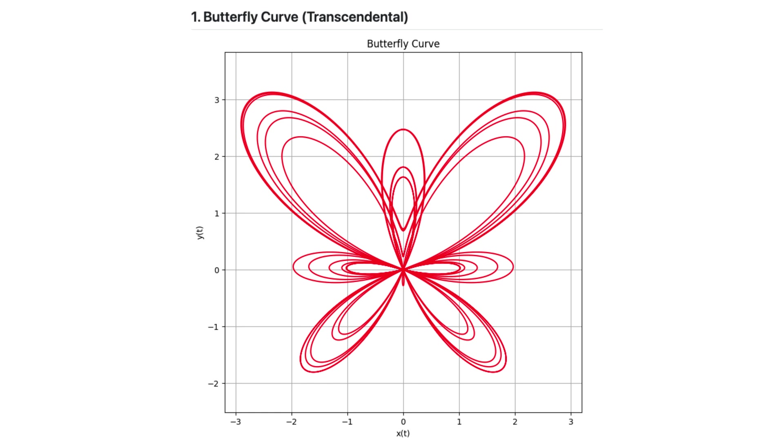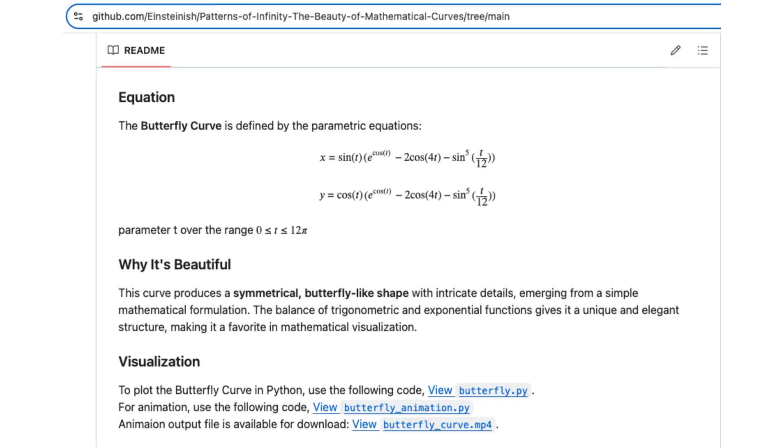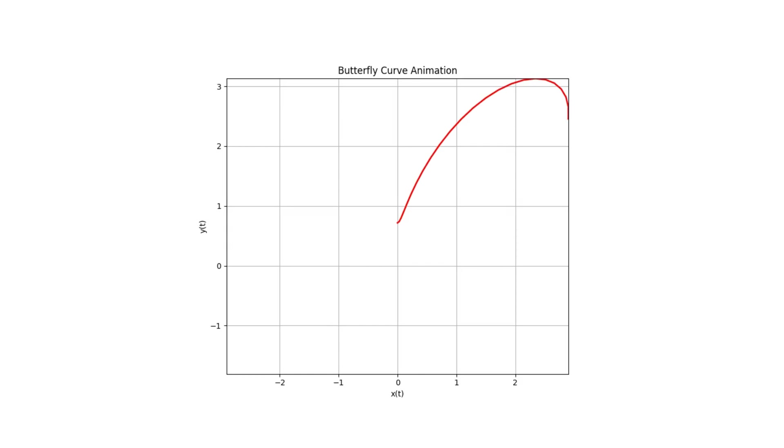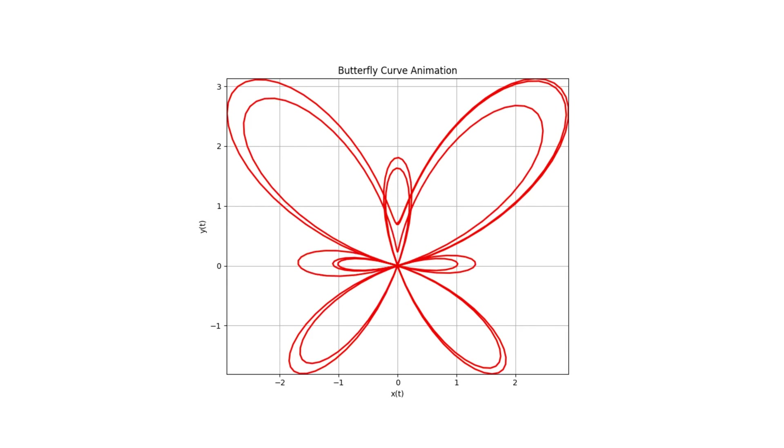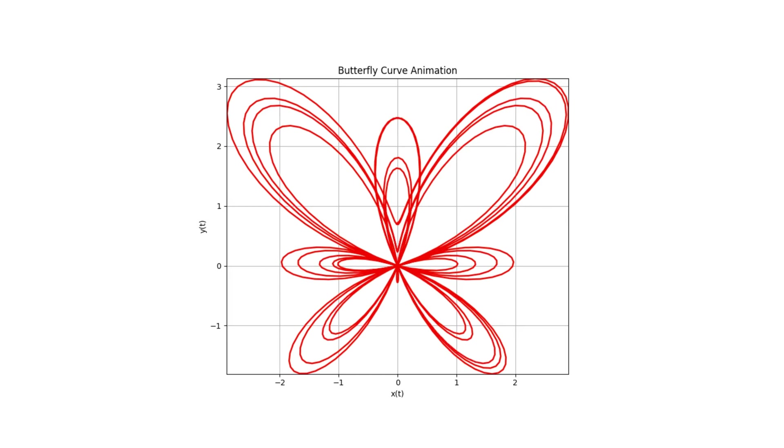The butterfly curve is a striking example of chaotic symmetry, a shape that flutters unpredictably yet retains an elegant structure. Defined by an exotic equation, it produces wings of intricate loops resembling a butterfly in flight.